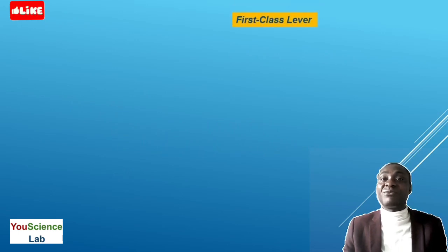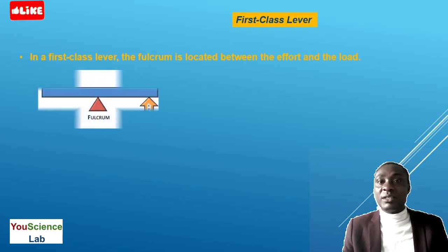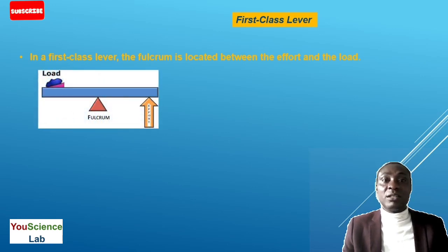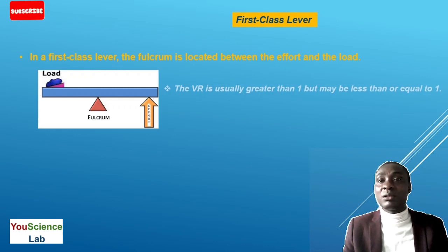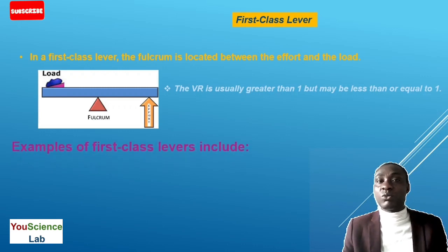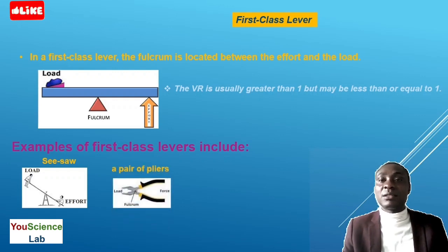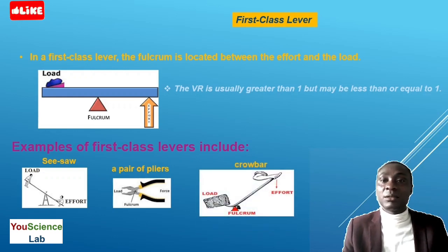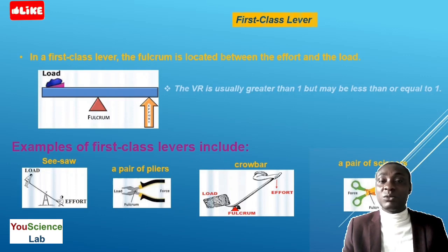The first type is the first class lever. A first class lever has the fulcrum in between the load and the effort. The velocity ratio is usually greater than 1, but may be less than 1 or equal to 1. Examples of first class levers are: a seesaw, a pair of pliers, and a crowbar. In all of these examples, the fulcrum is always between the load and the effort.